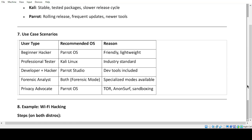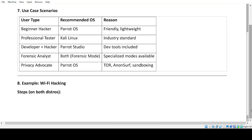Use Case Scenarios. Beginner hacker: Parrot OS — friendly and lightweight. Professional tester: Kali Linux — industry standard. Developer plus hacker: Parrot Studio — dev tools included. Forensic analyst: both — forensic mode and specialized modes available. Privacy advocate: Parrot OS — TOR, Anonsurf, sandboxing.